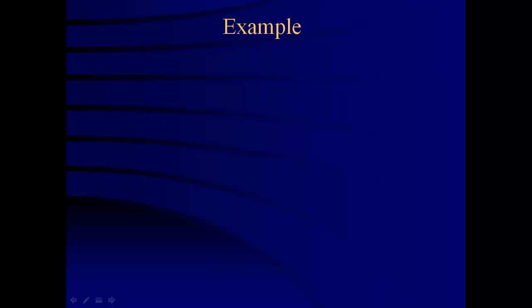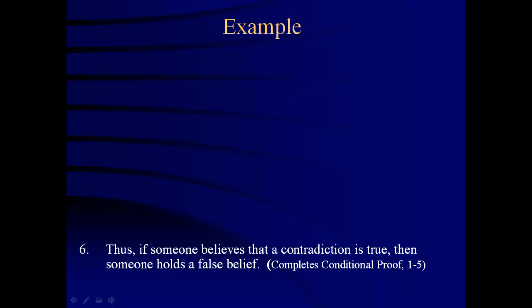Let's go through an example with real words, with real claims. So the cat's out of the bag here. Here's the conditional we're attempting to show: if someone believes that a contradiction is true, then someone holds a false belief. And we'll assume the antecedent. Notice this premise. We flag it as an assumption. We're pretending it's true. It's like saying, let's just suppose for the sake of argument and see where it goes.